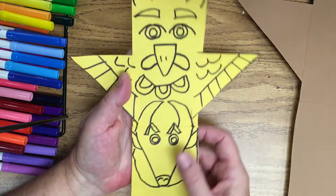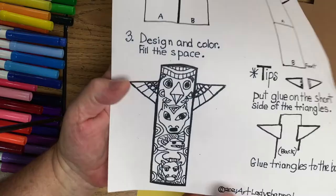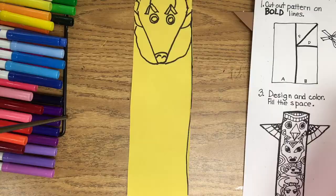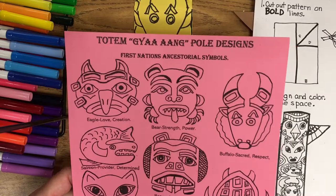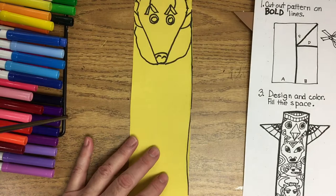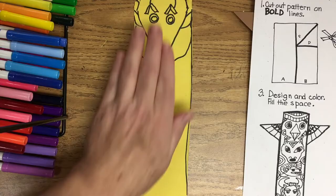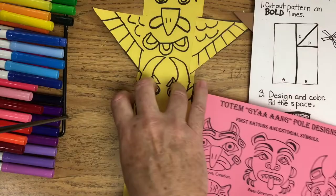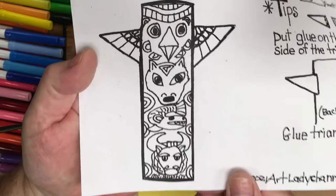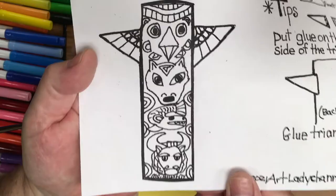And on this worksheet, you can see the one that's completed. You can use this worksheet and I'll put a link to the worksheet. Just click on the title and it'll take you to the links. My students did both freehand drawings of their designs like I did here. And some kids just cut out from my worksheet and glued them onto the totem. And now I'm going to show you some of my student examples.